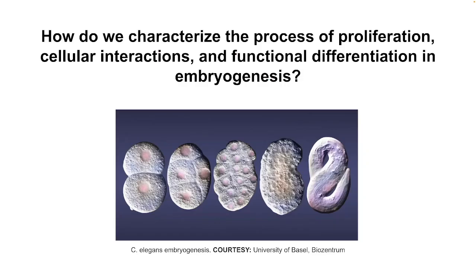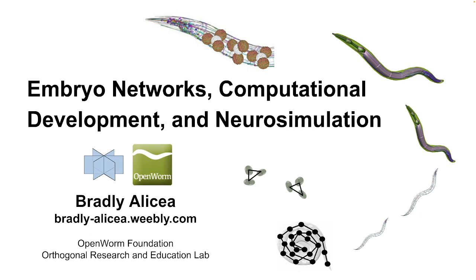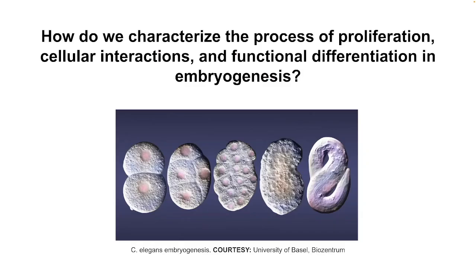The motivating question is: how do we characterize the process of proliferation, cellular interactions, and functional differentiation in embryogenesis? Here you can see an example of a C. elegans embryo developing from the two-cell stage. At about 200 minutes of development, you get the formation of a comma shape, then a pretzel phenotype where the larval worm starts to form within the egg.